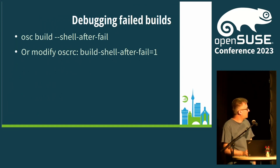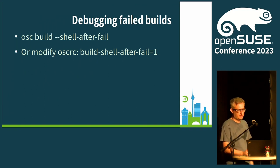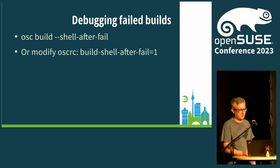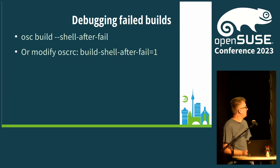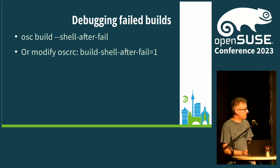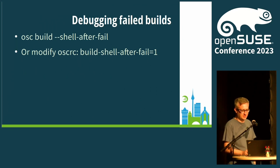Something I bumped into recently: when you build something locally and it fails, there's an option to get into the shell after the failed build so you can check what went wrong and try to resume the build. There also seems to be another option — modify oscrc and put the build-shell-after-fail equals 1 option. To be honest, I haven't tested this one; I just tested the first. This is extracted from the sources.